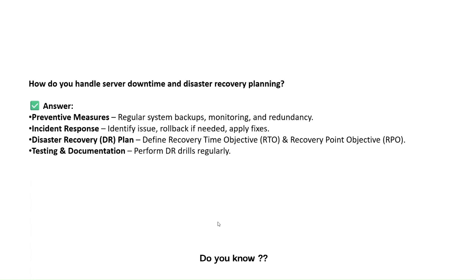How do we handle server downtime and disaster recovery planning? There are four things: First, preventive measures — regularly back up systems, monitoring, and redundancy. Second, incident response — identify the issue, roll back if required, and apply fixes. Third, disaster recovery planning — if we want to prevent these issues in future, we document them and create a plan for how to tackle that type of issue if it happens again.